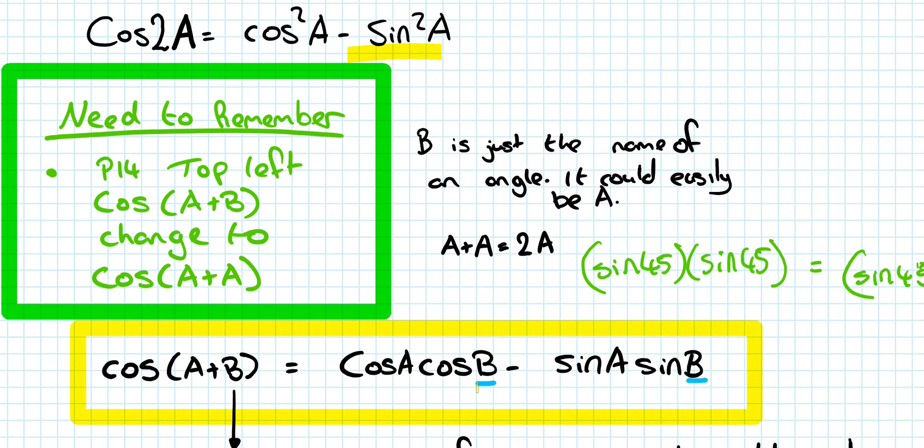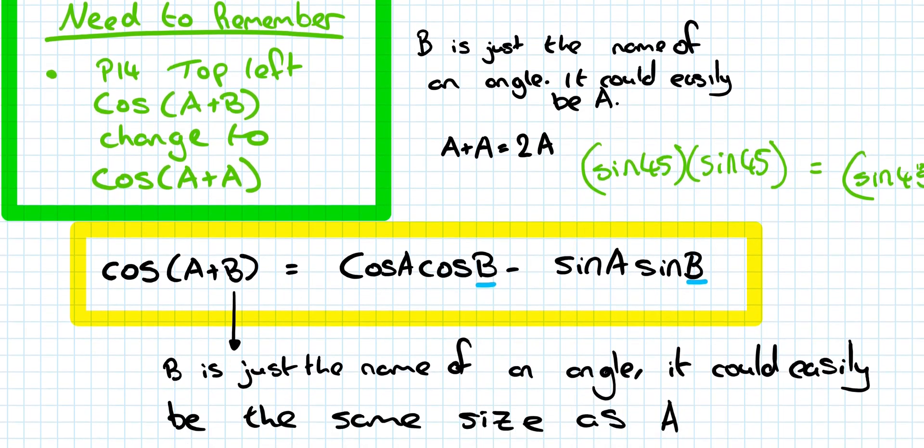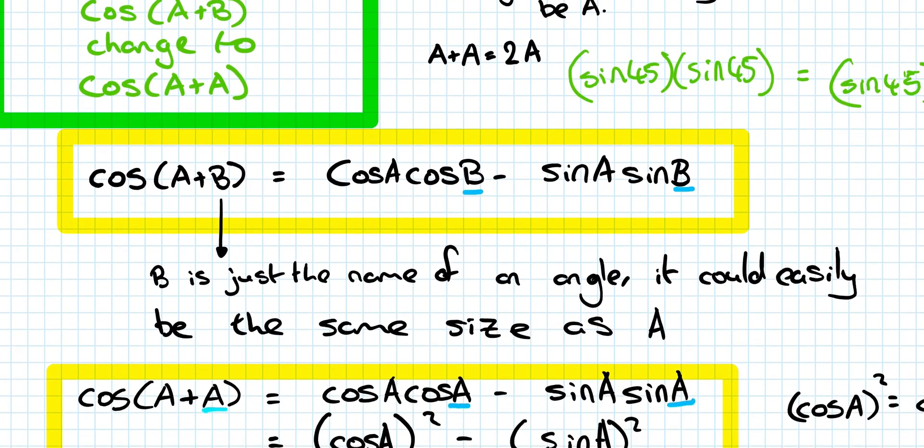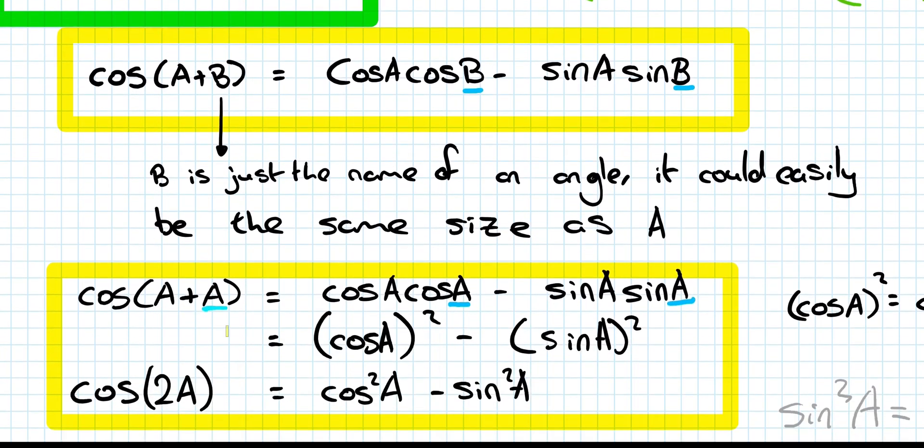Anywhere there is a B, we replace it with the letter A. B is just the name of an angle again. It could easily be the same size as A. Replace it with A.